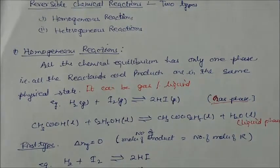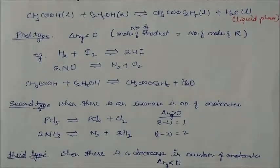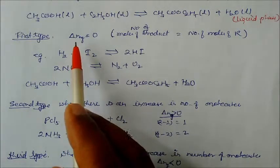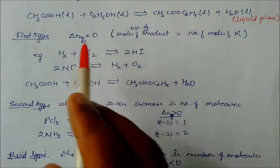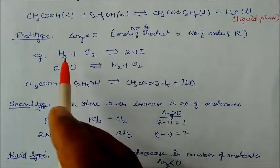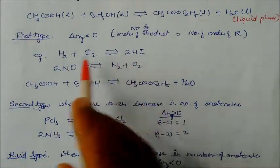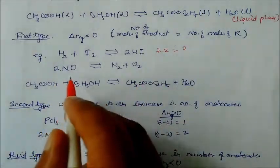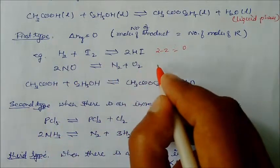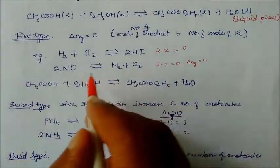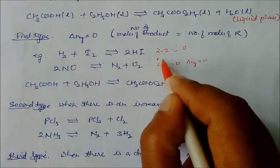These are called homogeneous chemical reactions. Under homogeneous reactions there are three different types: first, second, and third. The first type is when the sum of moles of gaseous products minus the sum of moles of gaseous reactants equals zero. This means the number of moles of product equals the number of moles of reactant. For example, H₂ + I₂ gives 2HI — two minus two equals zero. Similarly, nitric oxide: product is two moles, reactant is two moles, so Δn(gas) = 0.